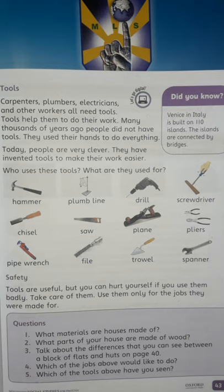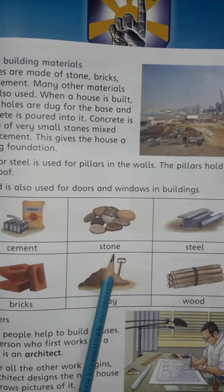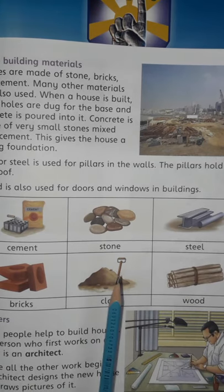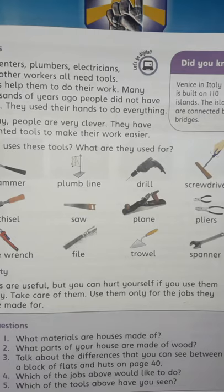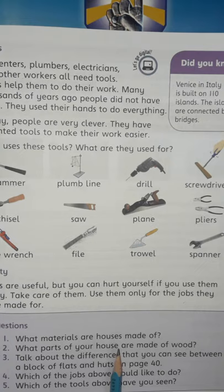We have studied all about tools and buildings. Let's answer these questions orally. Question one: what materials are houses made of? Cement, stone, steel, bricks, clay, and wood are some of the materials used to build houses. What parts of your house are made of wood? Look around — there are many parts of the house made of wood; try to answer this question yourself.